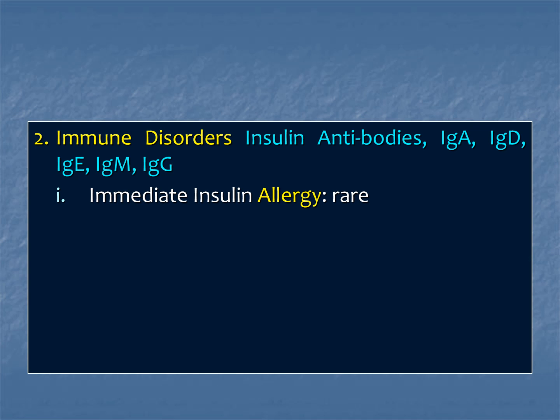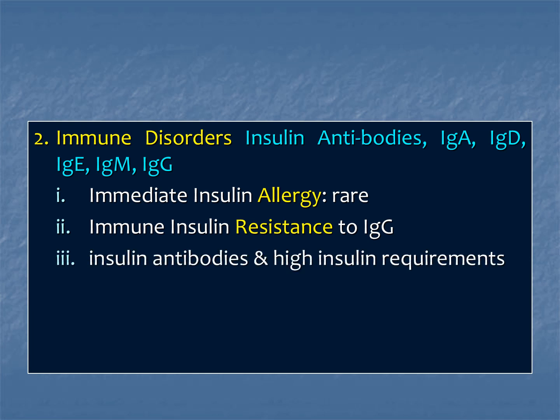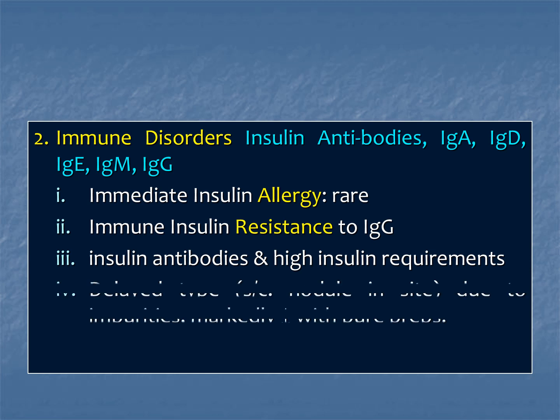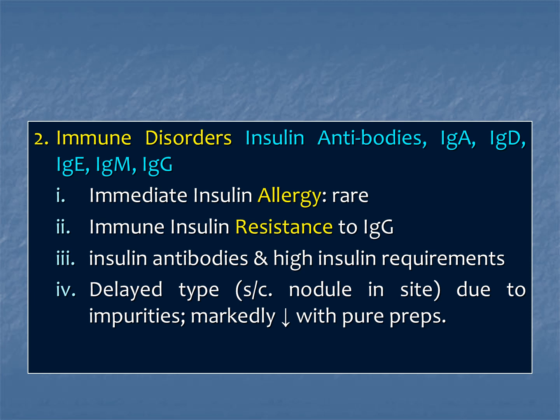There may be immediate allergy, which is very rare — especially with human insulin (humulins), almost very rare, but can be seen with some specific animal-origin insulin species. Second is insulin resistance developed via IgG. Third, high insulin requirement due to development of antibodies. There may also be delayed immune reactions — at the site of subcutaneous injection, nodules may form due to impurities in the insulin preparation, reduced by further purification.